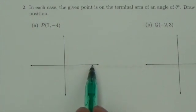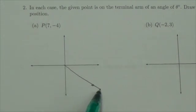So positive 7 along the x-axis, negative 4 on the y-axis. We're somewhere down here. So the terminal arm is going to look like this.